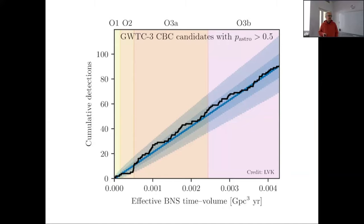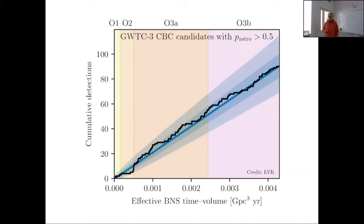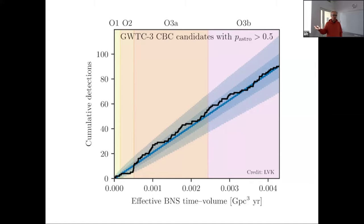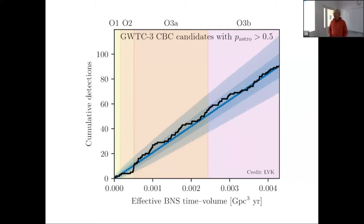With 100 detections, you can start doing statistics and considering the properties of the sources. In X-ray astronomy or gamma-ray astronomy in the old times, there was a saying that one photon is a detection, two photons are a spectrum, and three photons is spectroscopy. Now we have 100 sources, so we can do much more than that.